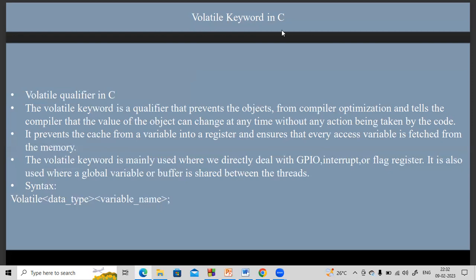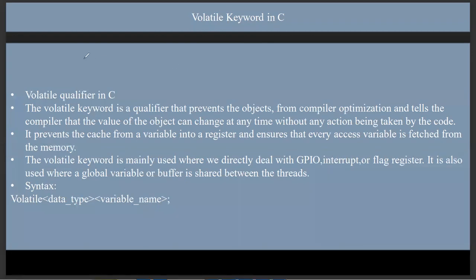The volatile keyword is one of the important keywords in C. The value of the volatile keyword can be changed without any intention or involvement of the compiler. The volatile keyword is directly picking the data from the main memory, not from the cache memory of shared variables.